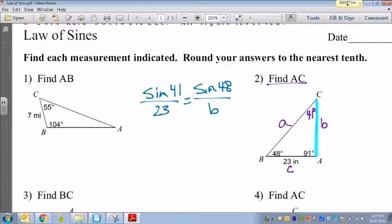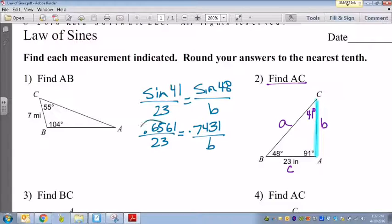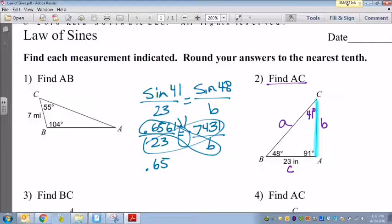So sine of 41, which is 0.6561, over 23 equals sine of 48, which is 0.7431, over B. You cross multiply, beautiful butterfly. And that's going to give me 0.6561 times B equals 0.7431 times 23, which is 17.0913.